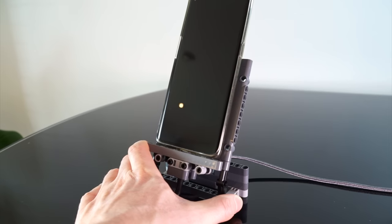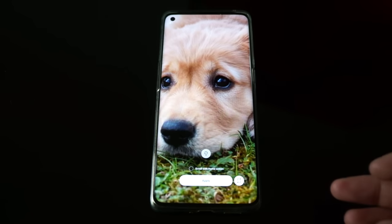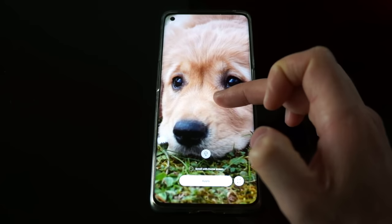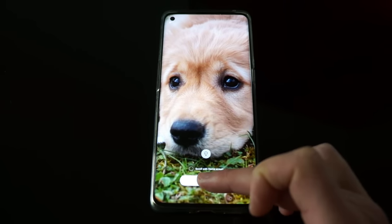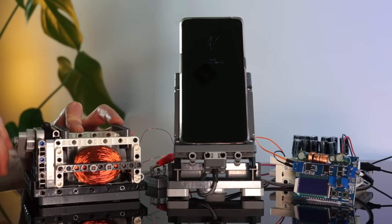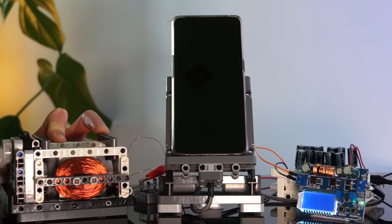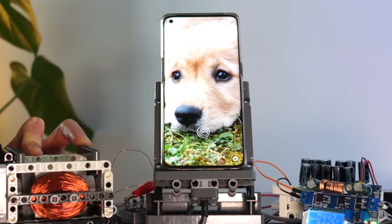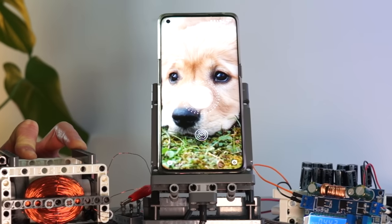Now before doing anything I'm going to change my phone's background to a puppy because everyone loves puppies and because my last background was not puppies. Okay let's charge. Hey there we go we have a charge indicator.